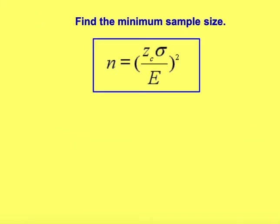The last thing we need to talk about is how we can calculate what our sample size should be if we want to stay within a certain error. We rearrange the formula to find N: N equals the quantity Z sub C times the standard deviation divided by the desired error, squared. Let's look at an example using Try It Yourself number 6 on how to calculate what N should be.